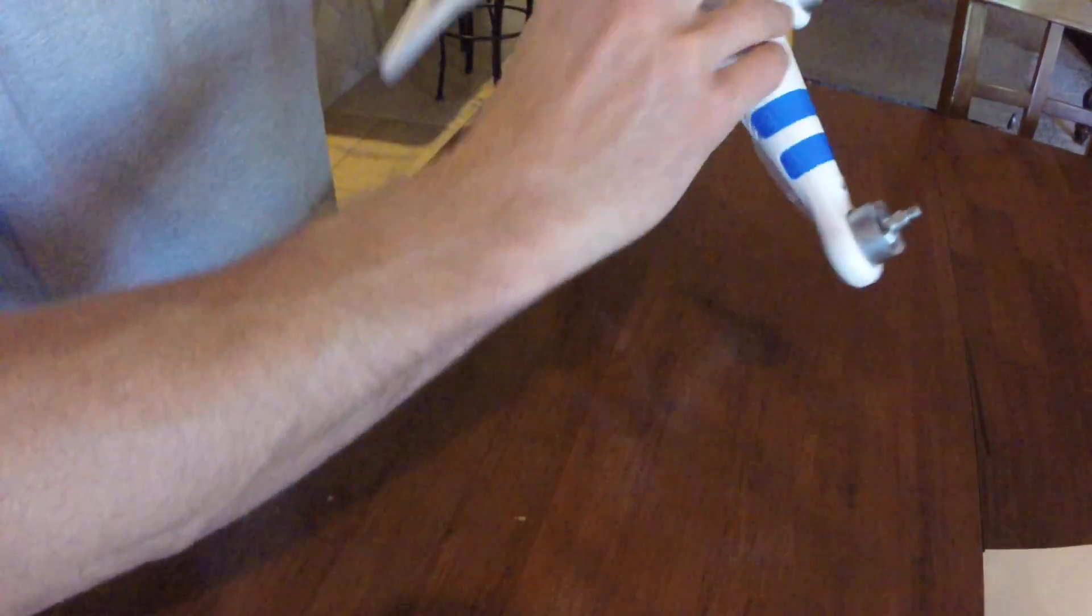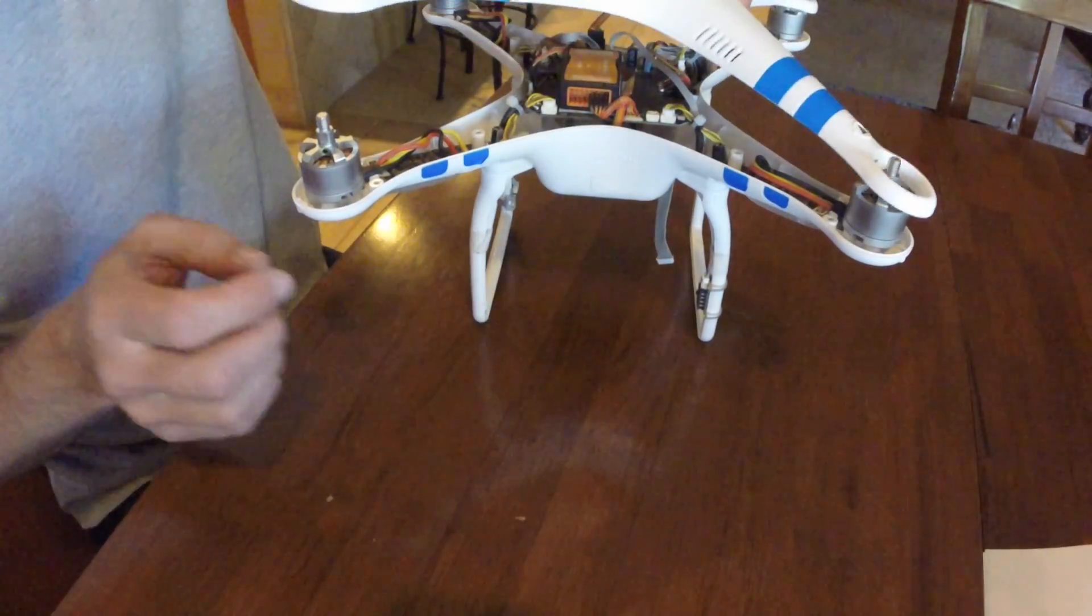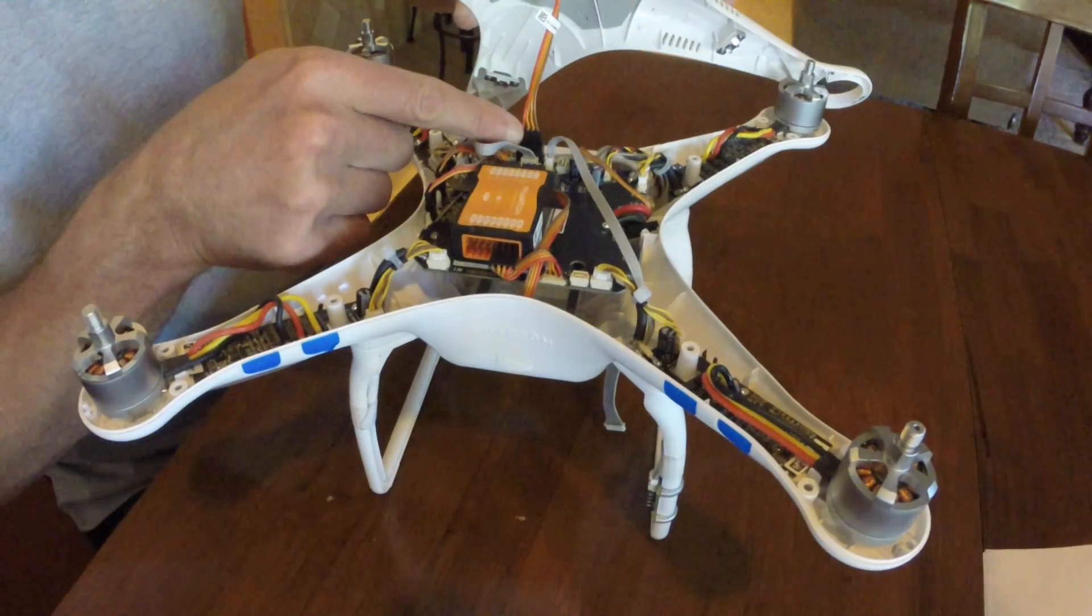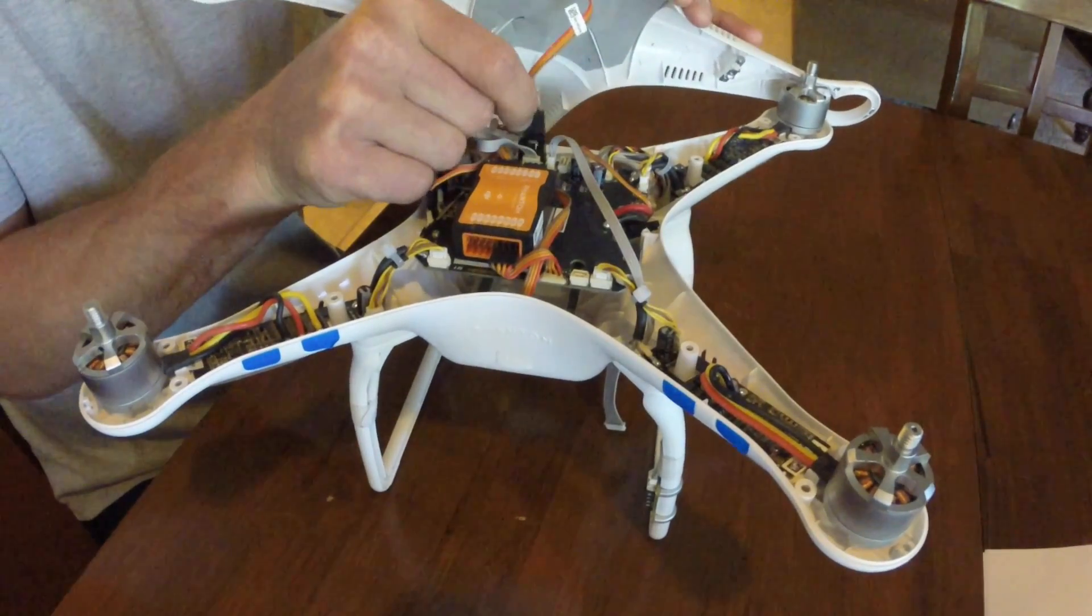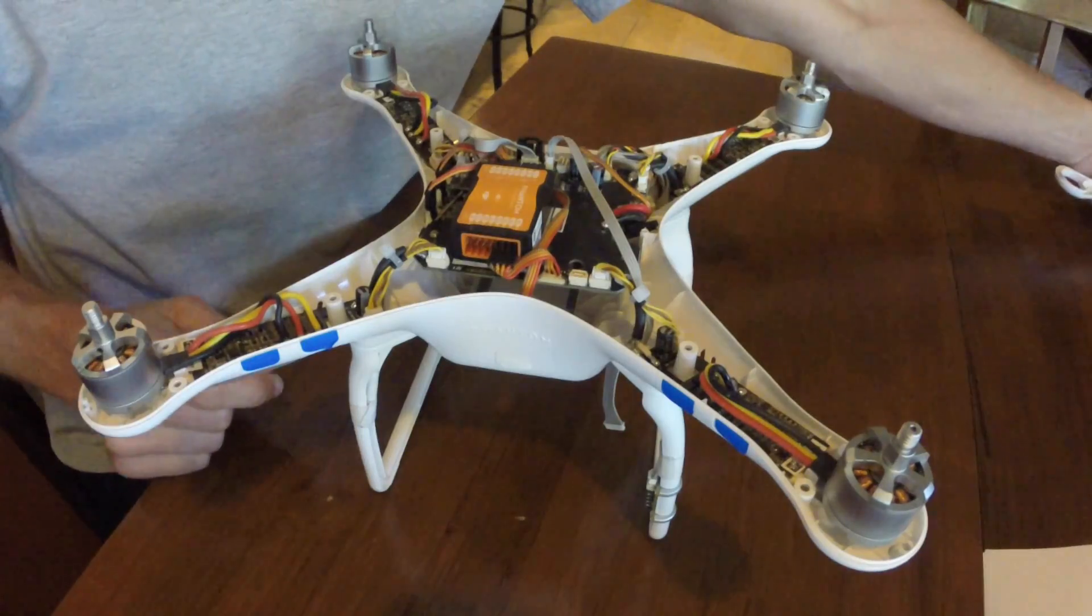Once you've got all the screws removed, flip the drone over to take off the top. You'll see here it has the GPS wire attached. This easily is pulled off and set aside.